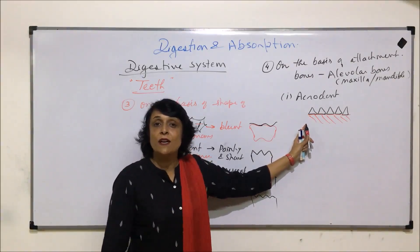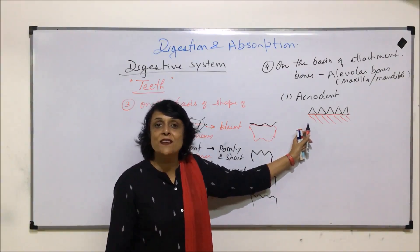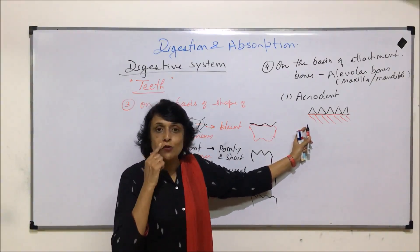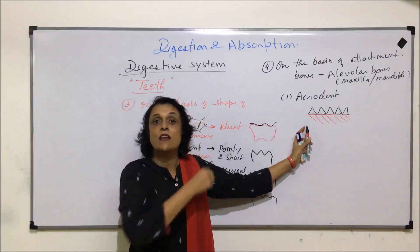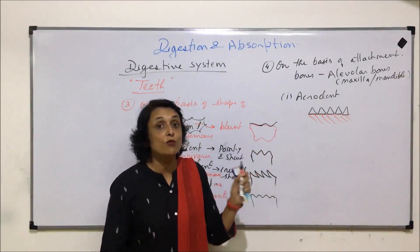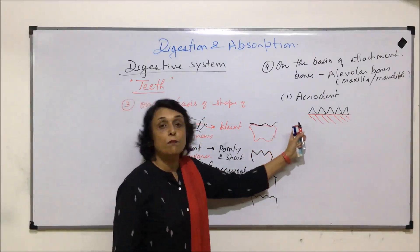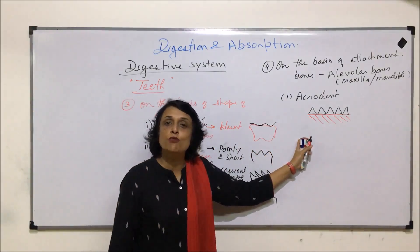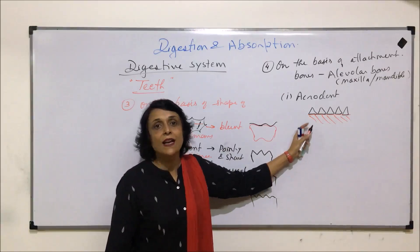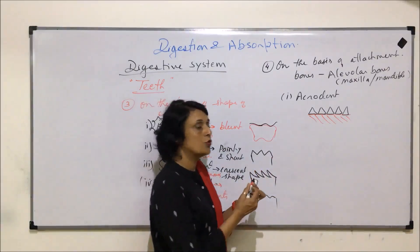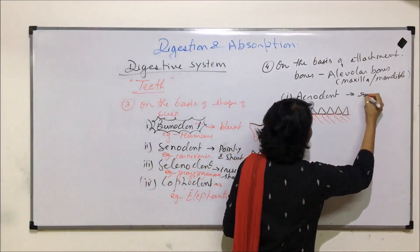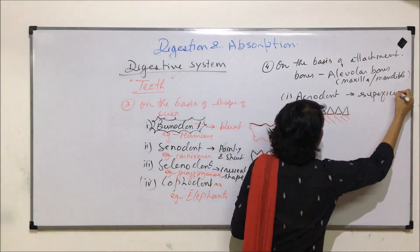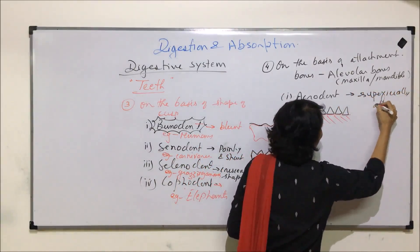That means this type of attachment is seen in case of amphibians and fishes. If you are able to recall, we said amphibians and fishes, they have polyphiodont dentition. That means as many times the teeth fall off and every time the new sets appear. Reason, the attachment is very loose. So we write it as superficially attached.